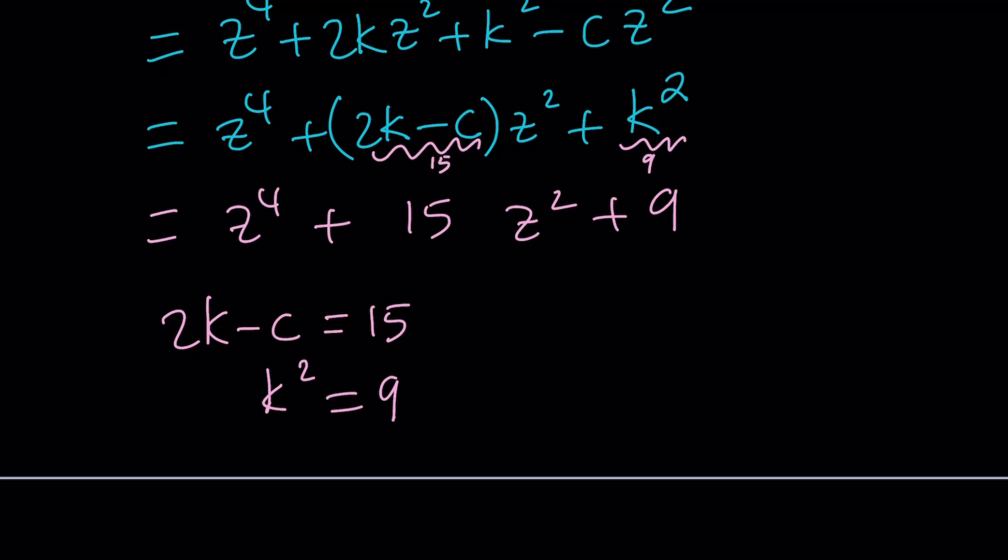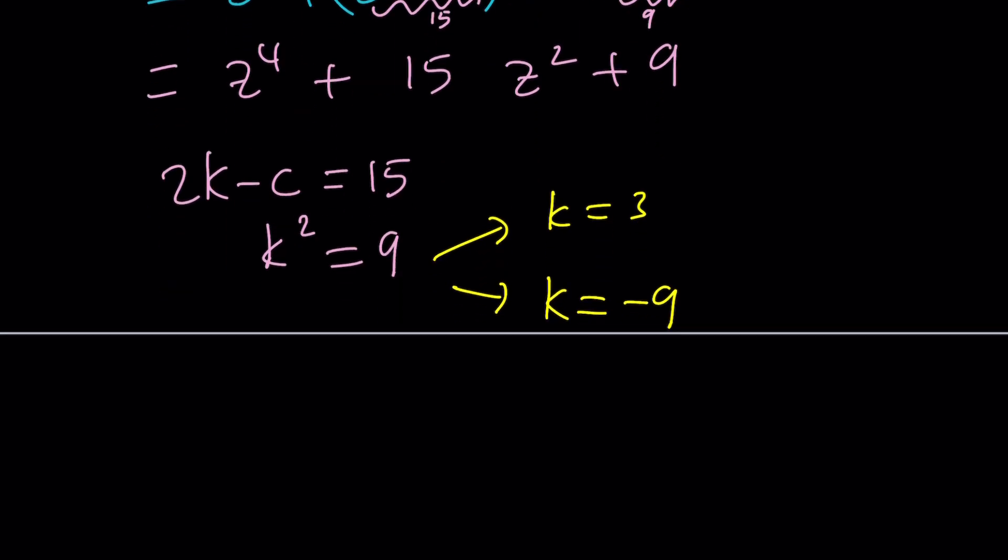One of them is k equals positive 3. The other one is k equals negative 3. You just got to recognize, make sure that you know k and c are real numbers. Okay. Now what do we do with that information, right? Oops, did I put negative 9? I meant negative 3, of course, right?